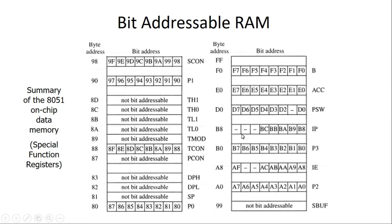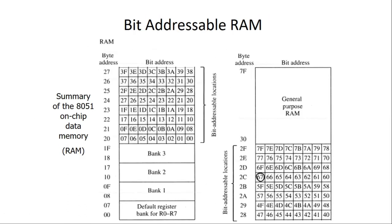The last part of the RAM is the general purpose RAM. This general purpose RAM starts from address 30 hex to 7F hex. In this section the locations are byte addressable, meaning we can access the entire byte, and this memory can be used for any general purpose operations.